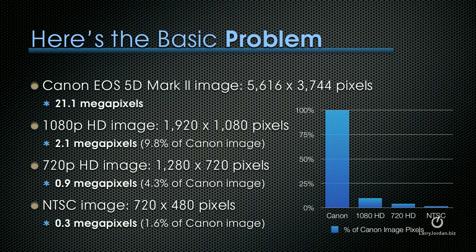That's less than 10% of the Canon image resolution, represented by the second bar from the left in the chart. If we go to 720p — that's 1280 by 720 — that's 0.9 megapixels, or 4.3% of a Canon image. And NTSC is an image size of 720 by 480, which works out to 0.3 megapixels, less than 2% of the Canon image — the far right bar in the chart.